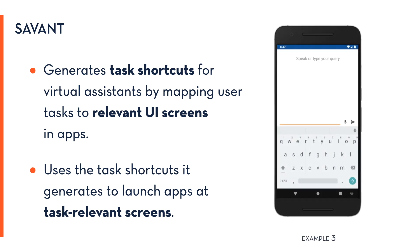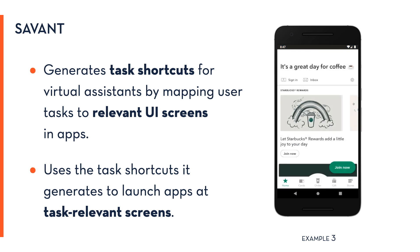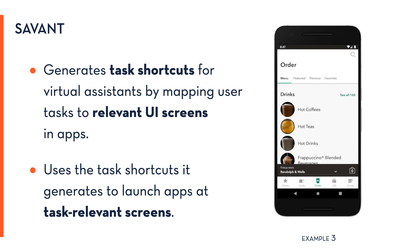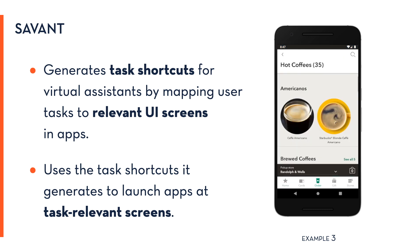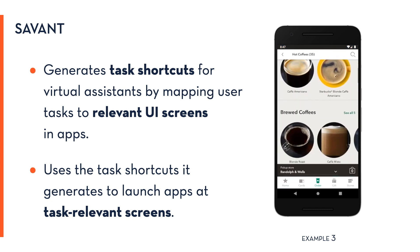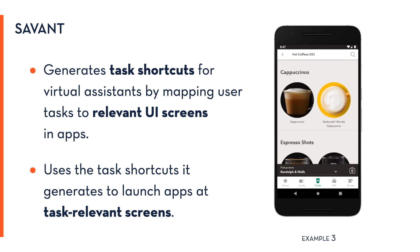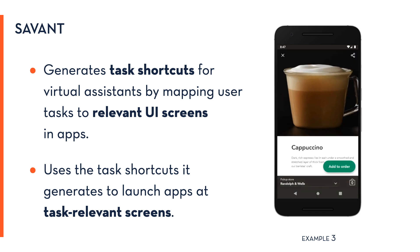This last example shows how Savant handles launching UI states that require prior input. Given the task description 'order cappuccino from Starbucks,' Savant identifies the task-relevant screen and replays the existing interaction trace to reach it, selecting the required menu elements along the way.